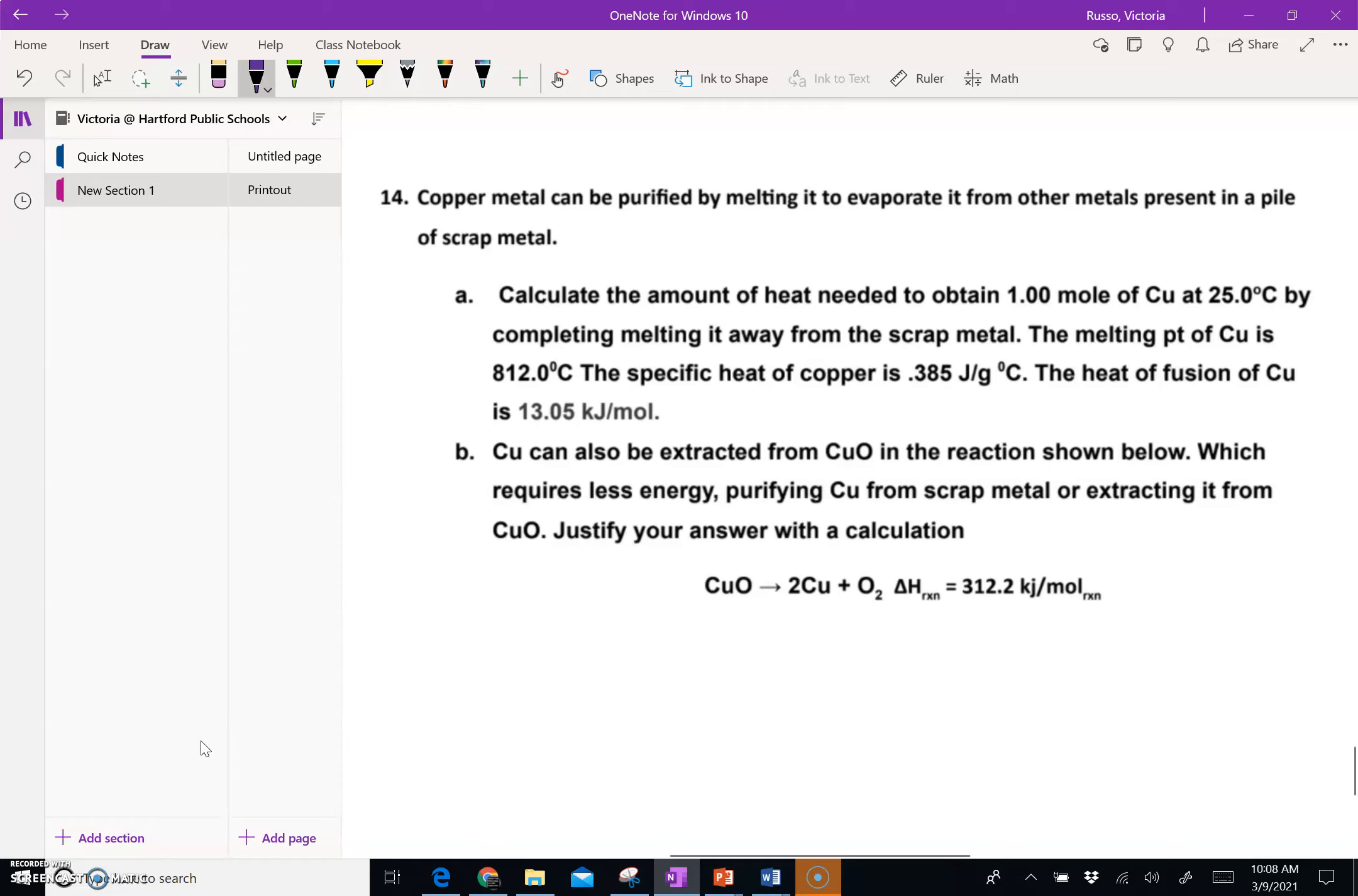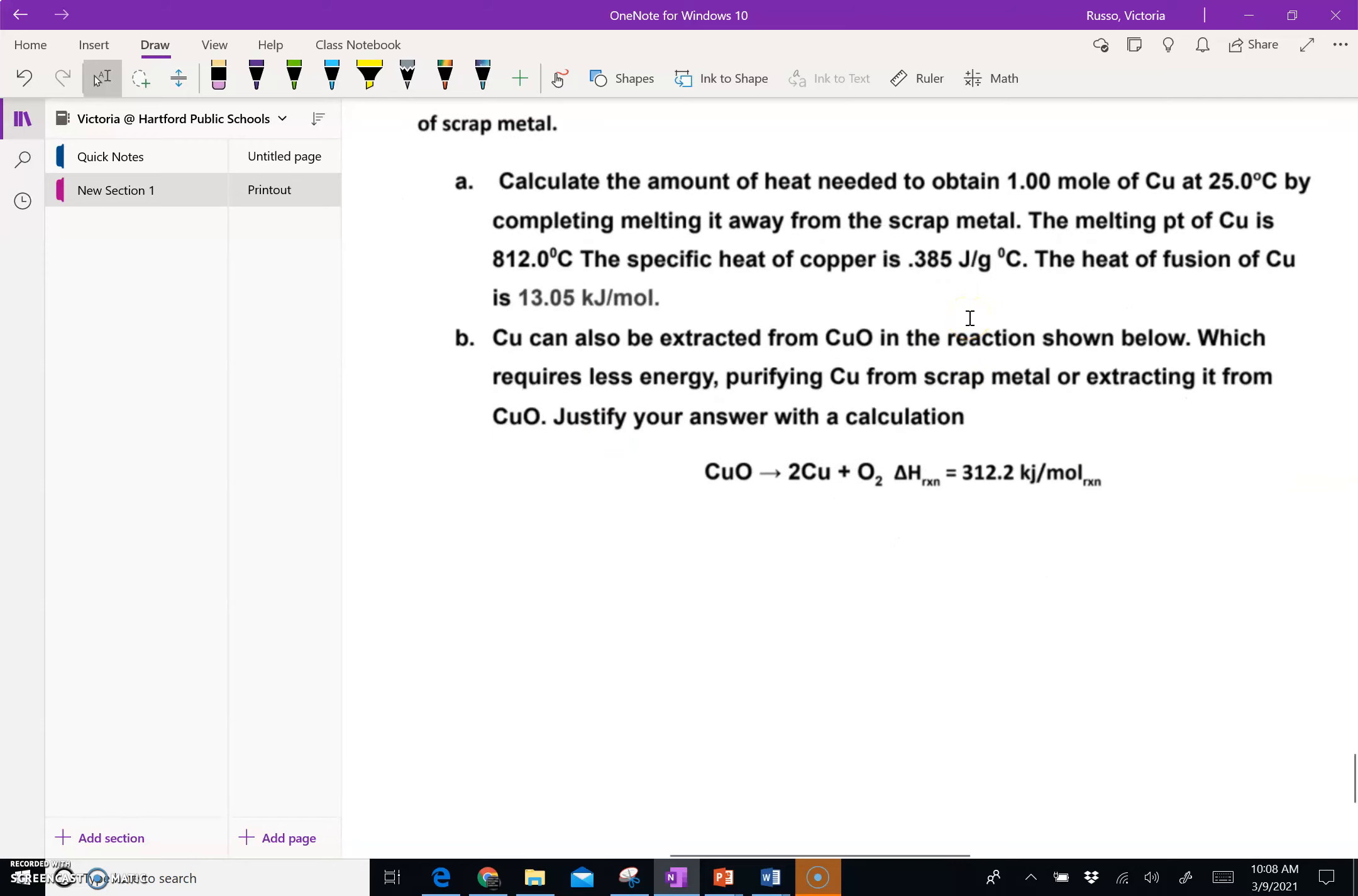It says copper metal can be purified by melting it to evaporate it from other metals present in a pile of scrap metal. Calculate the amount of heat needed to obtain one mole of copper at 25°C by completely melting it away from scrap metal. The melting point of Cu is 812°C, the specific heat of copper is 0.385 J/g°C, and the heat of fusion is 13.05 kJ/mol.